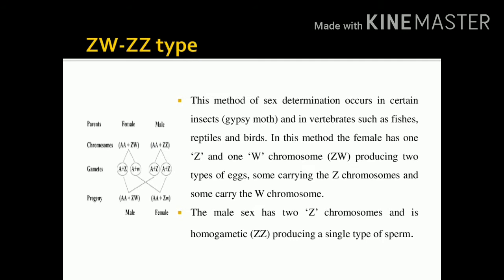In the ZW/ZZ type, the female has Z and W chromosomes, producing two types of eggs: some carrying Z chromosomes and some carrying W chromosomes. The male has homogametes ZZ, producing a single type of sperm. To differentiate: heterogametic males use XO/XX and XY/XX types, while heterogametic females use ZO/ZZ and ZW/ZZ types.